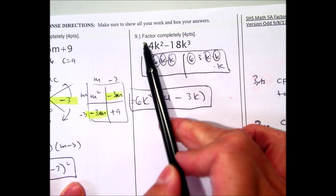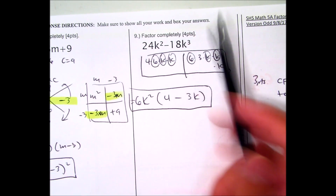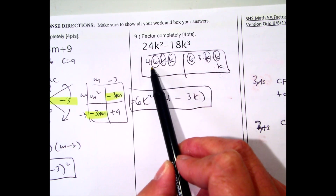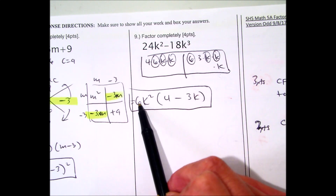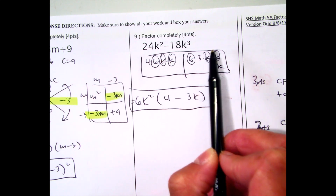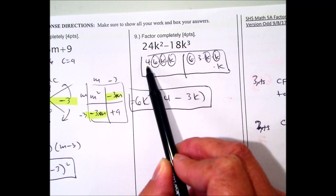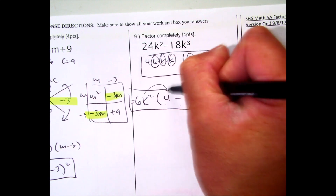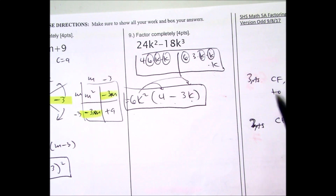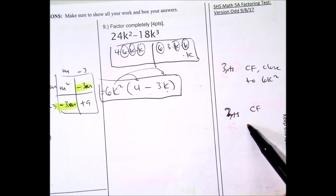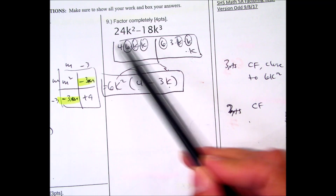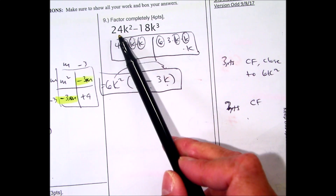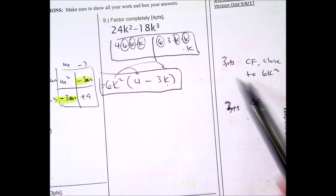Question number 9: factor completely. The very first thing you should always do is find a greatest common factor — break them into prime factorizations and look for what they have in common. They each have a six, so write it out once. They each have a K and a K, so that's K squared. Whatever you circled, copy down inside the parentheses — this would be 3K, separated by subtraction. Always double-check by distributing. If you found another common factor, such as just a 2 — they're both even — I gave two points, but it's not good enough. If you got 6K² I gave you three points.